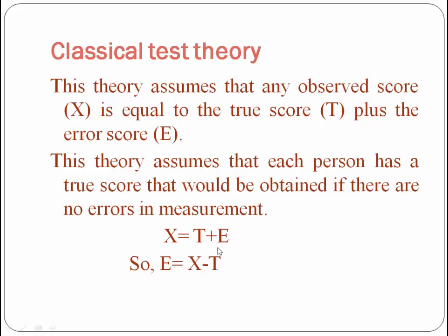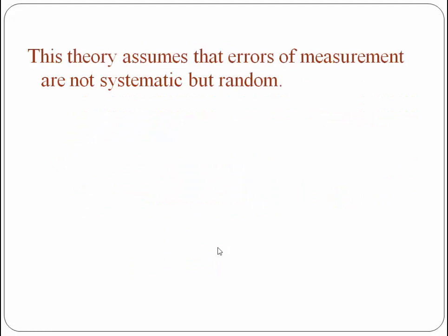According to this theory, errors of measurement are not systematic but random. This means that if you administer the same test, the error scores will increase and decrease randomly. The random conditions are not systematic — meaning the errors will not consistently increase or decrease every time.